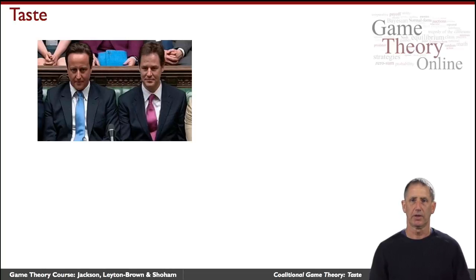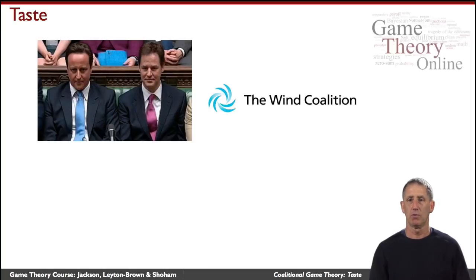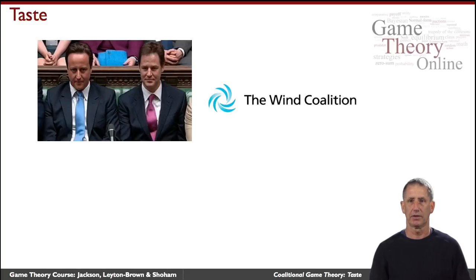That's a classical example where a coalition forms. When you think about coalitions, we usually think about political parties. But coalitions form not only in politics — they certainly form in business. The wind coalition is the coming together of a number of firms in the United States to promote the joint agenda of wind energy, turbines and such. Again, these are companies who are competitors, and nonetheless they feel that together there are things they can do that they can't do alone — for example, lobby government, establish standards, and things of that nature.